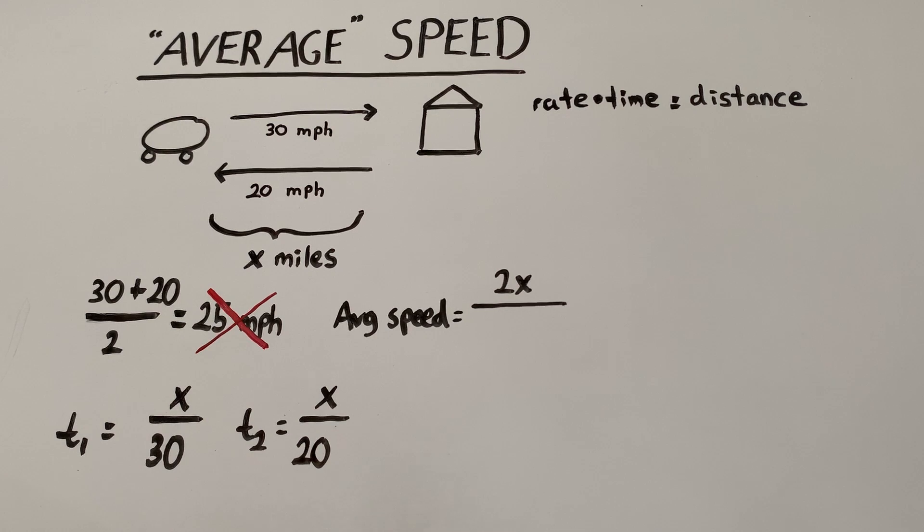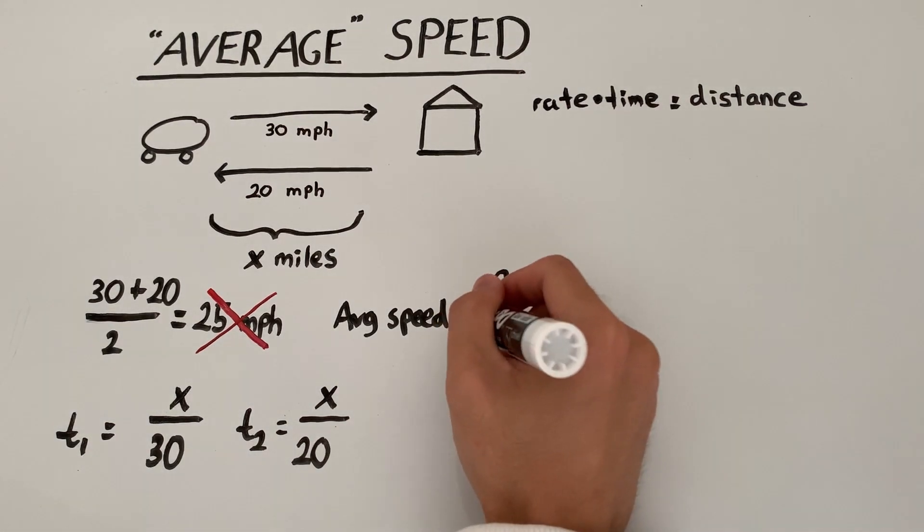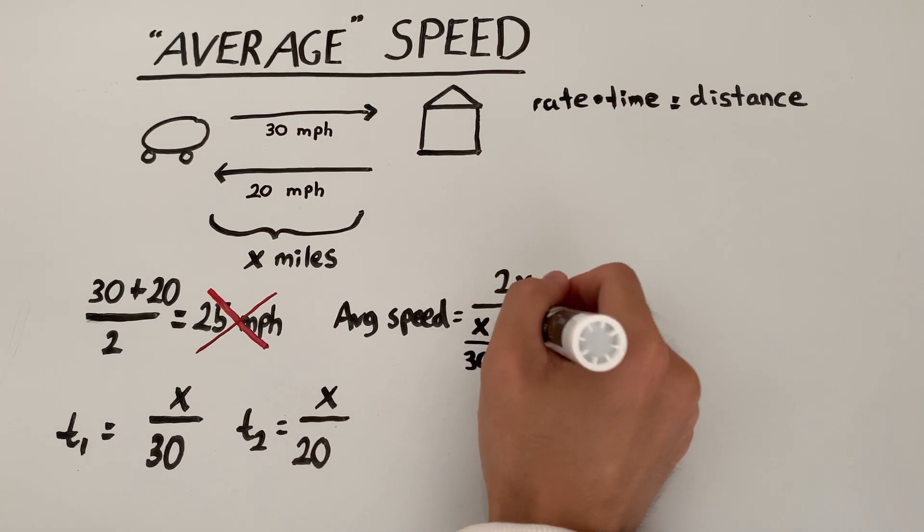So then now, we can find the total time. The total time is just these two individual times added together. So we can find the average speed. We have the total distance of 2x. And now, we have a total time of x over 30 plus x over 20.